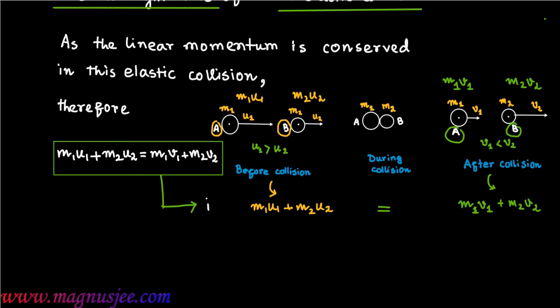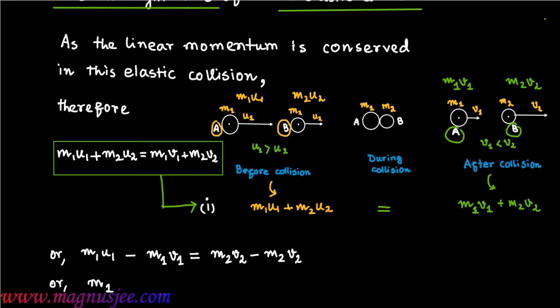Rearranging the momentum equation, taking M1 terms to one side: M1(U1 - V1) = M2(V2 - U2). This is Equation 2.